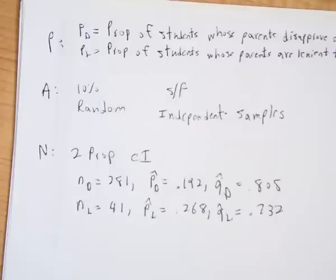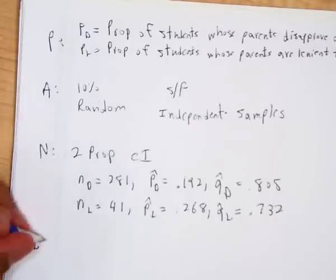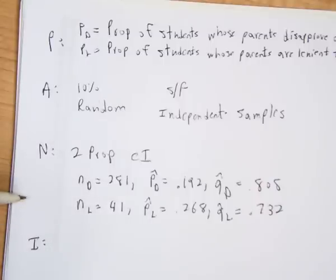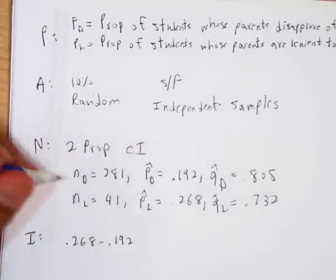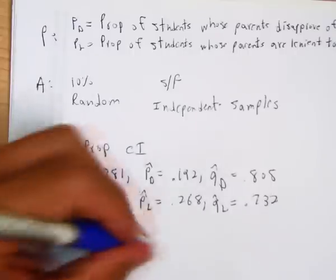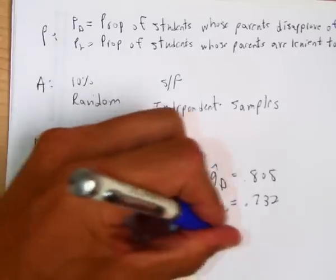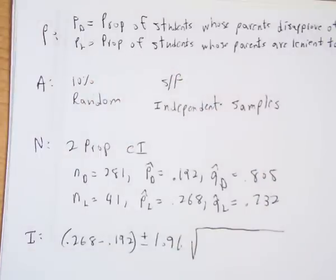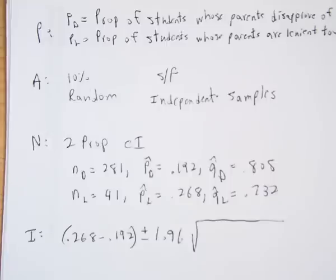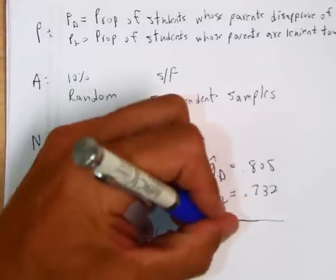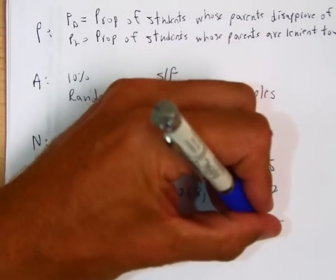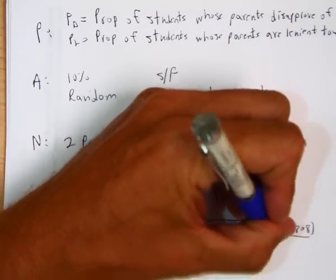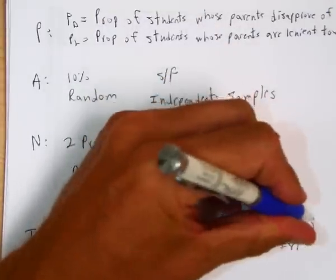So now we've got to calculate the interval. So I'm going to do this. I always like to do the larger one first. So I'm going to put the lenient parents first. So I'm going to put .268 minus .192, plus or minus 95% confidence interval has a Z score of 1.96 times the square root of now, we're not going to use P pooled here, because we're not using standard deviation. We're using standard error. So we're going to do P hat sub L times Q hat sub L over N sub L plus...